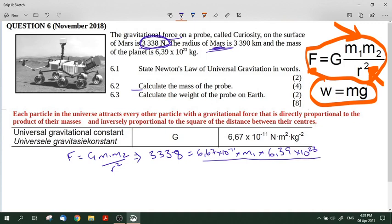And this is all over r squared, the square of the distance between their centers. Now they have given you the radius of Mars, but they have given you the radius in kilometers. We may not put kilometers in this formula. We have to convert the kilometers into the SI unit, which is meters. So I'm going to multiply this by 10 to the power of three, because that's how we convert kilometers into meters. There are 1000 meters in a kilometer.